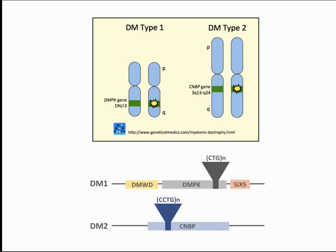We don't usually do a biopsy to make a diagnosis — EMG can help if patients have myotonic discharges, but we do genetic testing. The genetic testing is quite interesting because both type one and type two myotonic dystrophy are due to repeat expansions. In type one, it's a repeat expansion in the DMPK gene — a trinucleotide CTG repeat expansion. In type two, it's a CCTG repeat expansion in the CNBP gene, also called the zinc finger 9 protein gene, which is a transcriptional gene.